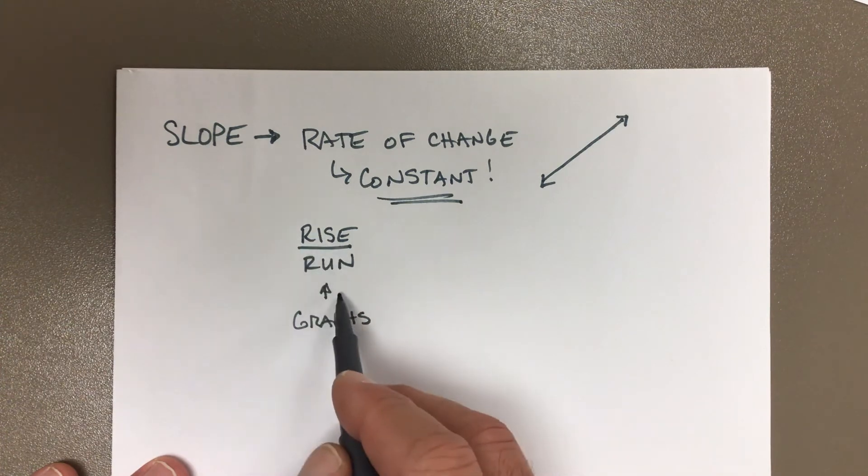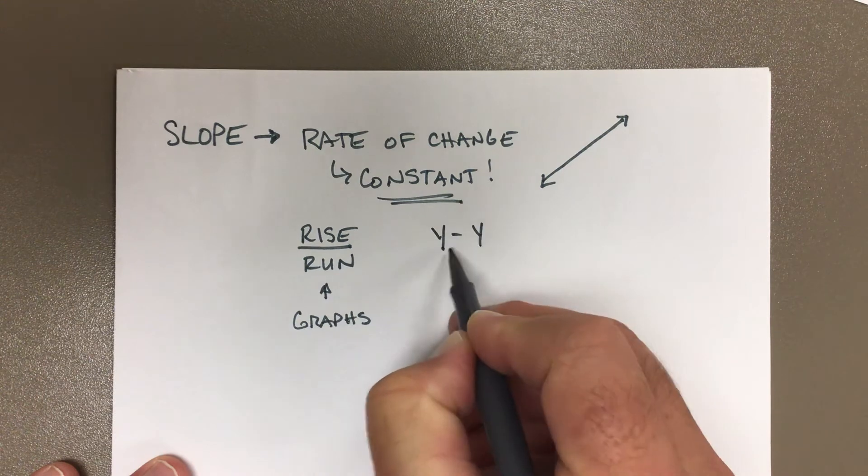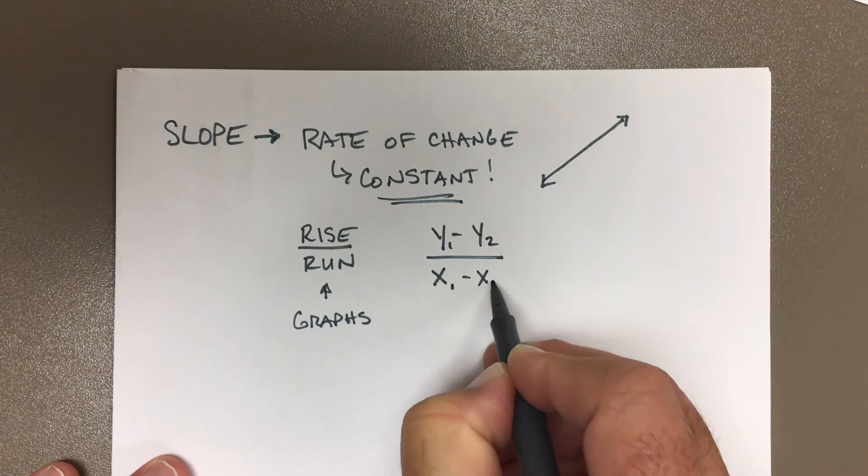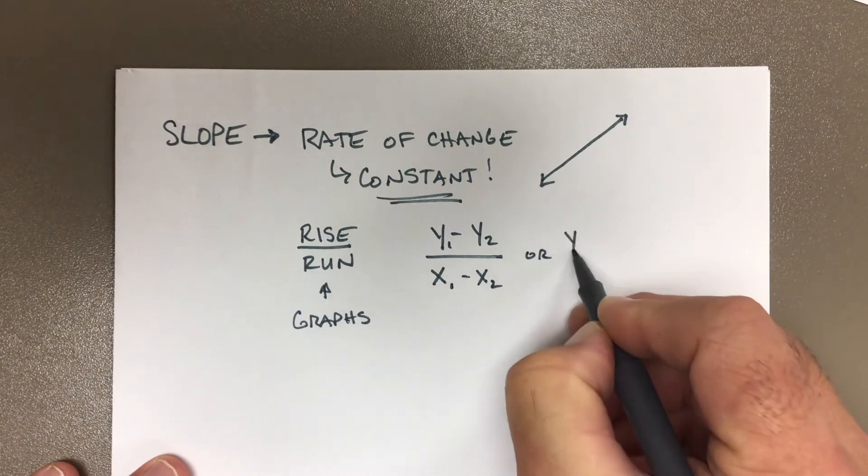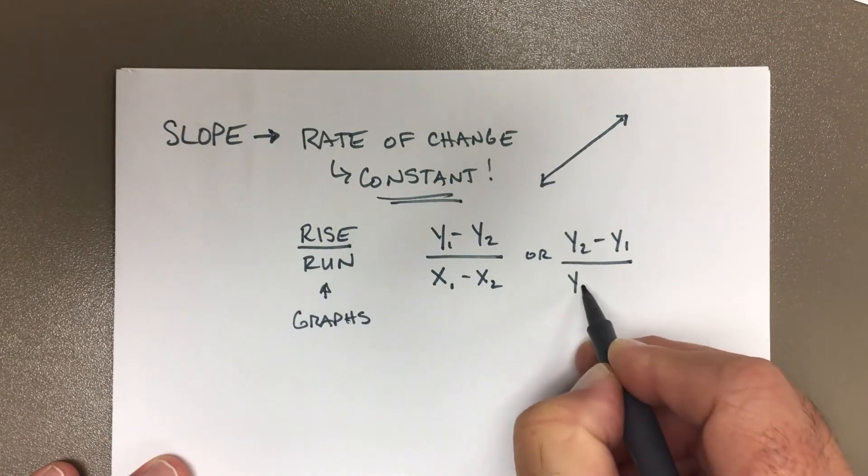Sometimes we use something like this—it looks a little funky because we have these little sub numbers. The key to these sub numbers is to make sure that it doesn't matter which way you have it...